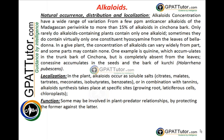Only rarely do alkaloid-containing plants have only one alkaloid. Sometimes they contain virtually only one constituent — e.g., hyoscyamine from the leaves of belladonna. In a given plant, the concentration of alkaloids can vary widely from part to part, and some parts may contain none. One example is quinine, which accumulates in the trunk bark of Cinchona but is completely absent from the leaves. Coniine accumulates in the seeds and bark of Conium maculatum.